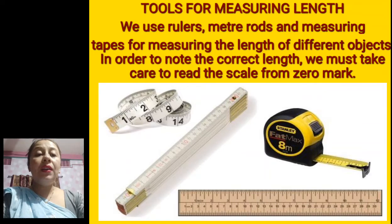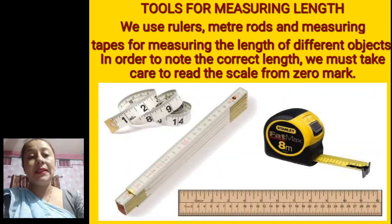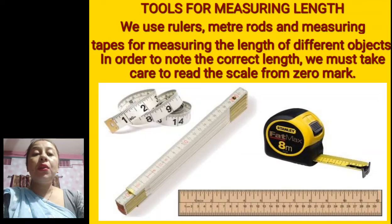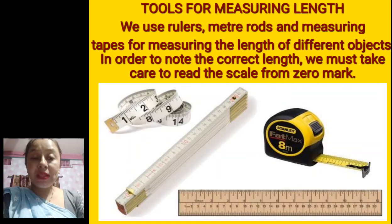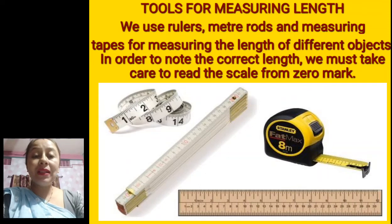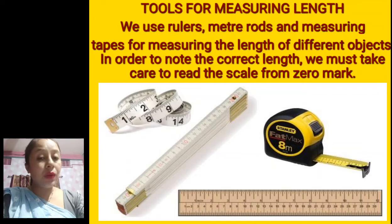In order to note the correct length, we must take care to read the scale from the zero mark. You have to start from zero — zero, one, two, three. Like if your pencil is three centimeters, you will start marking it from zero, then one, two, three. In that way you will get the correct measurement.